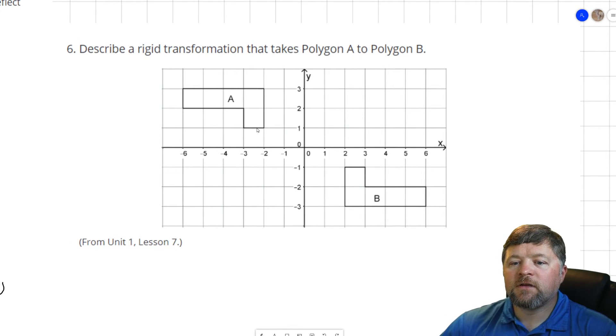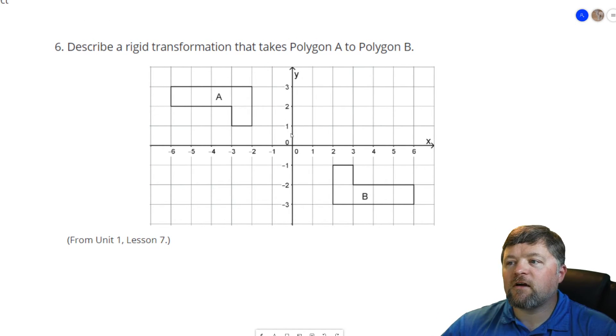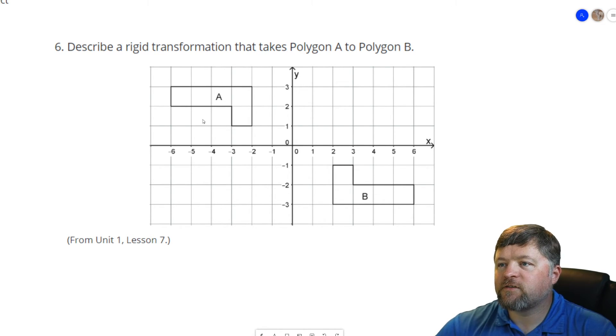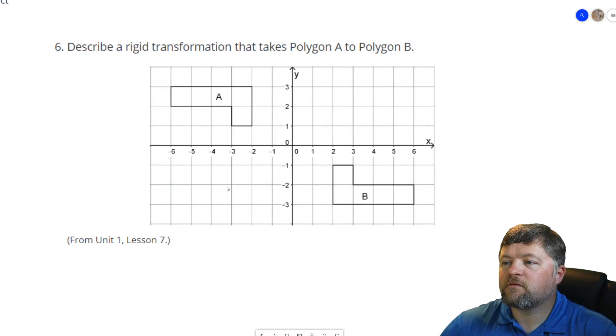Okay, next question. Describe a rigid transformation that takes polygon A to polygon B. So we want to take this figure here into this figure here. So I believe there are multiple ways we could do this. The first thing we could do is we could rotate 180 degrees around the origin.